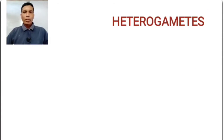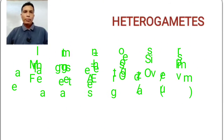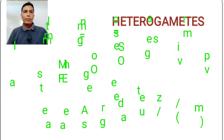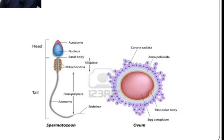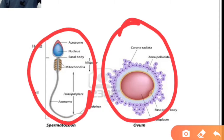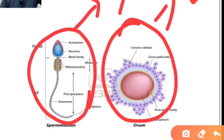The male gamete of heterogametes is called antherozoid or a sperm cell, and the female gamete is called egg or ovum. These are heterogametes. The male gamete is known as a sperm cell and the female gamete is called egg. Sperm is motile, and egg is non-motile.